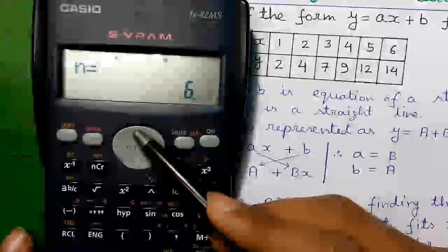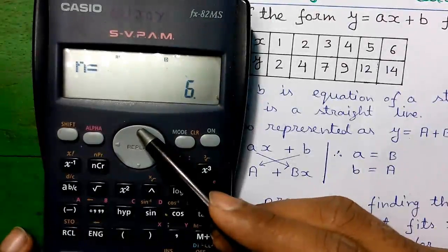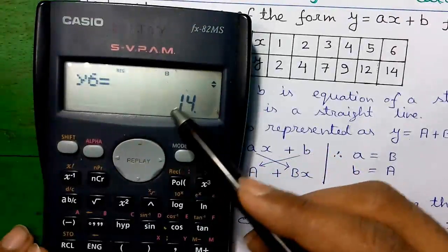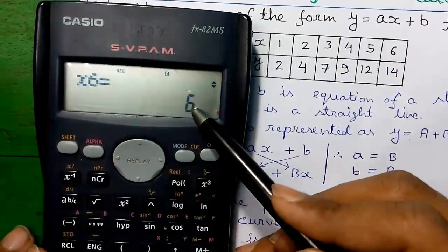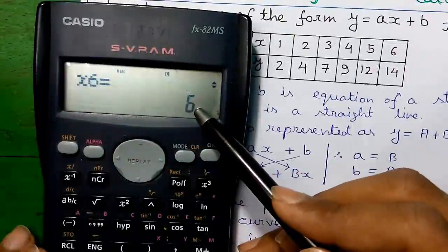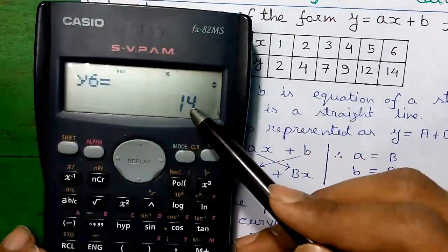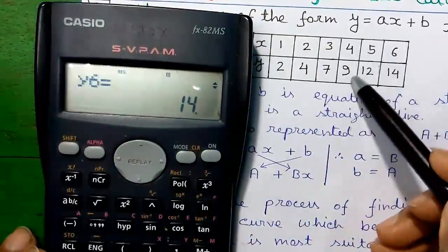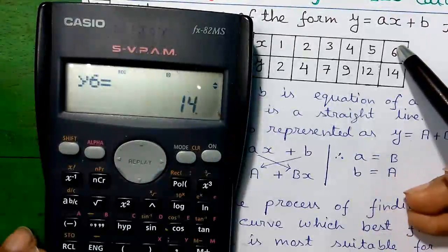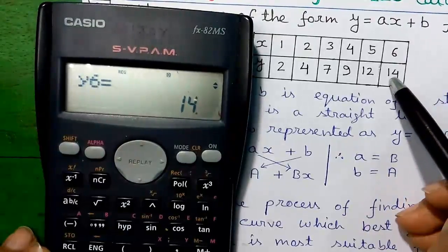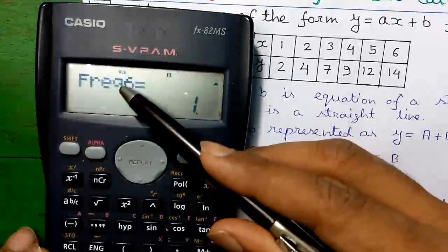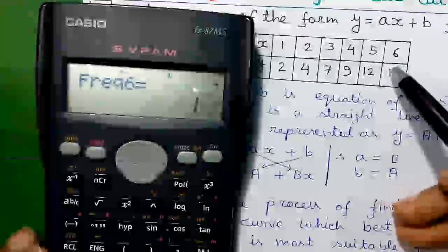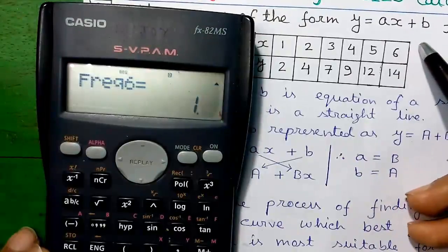If you want to check any entered value, press the joystick up. You can see Y6 is 14 and X6 is 6 — that means the sixth value of X is 6 and the sixth value of Y is 14. This is our first data set, second, third, fourth, fifth and sixth. The sixth data set is 6 and 14. Next is frequency — the frequency of the sixth entry is 1, meaning that data set occurs only once in the table.